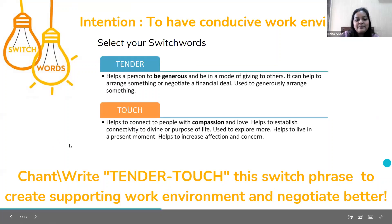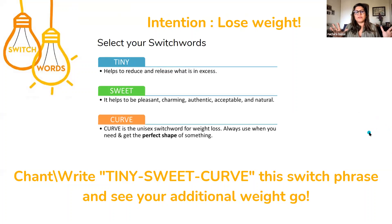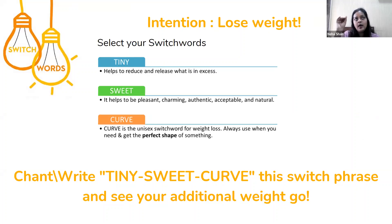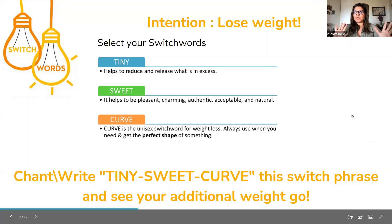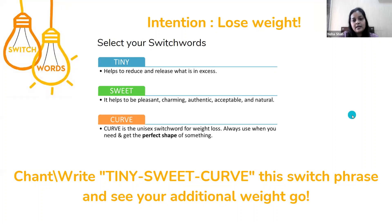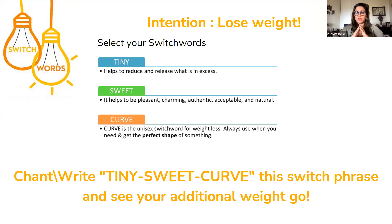Can you set a specific intention, like wanting to lose five kilos? Yes, you can do that. I had taken a generic intention that many people can relate to, but if you have a specific weight in mind — let's say your ideal weight is 59 — you say: my intention is to reach my ideal weight of 59. Whatever your ideal weight would be. After that, you only need to chant or write the switch words — tiny sweet curve. You don't need to write the explanation of the words.